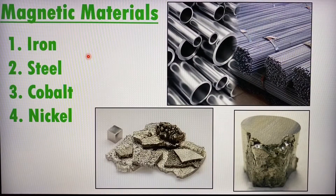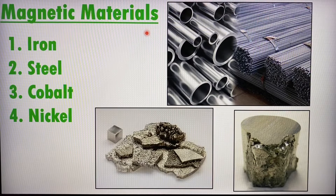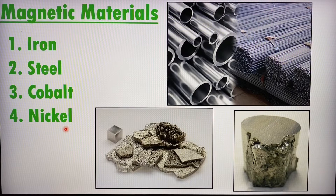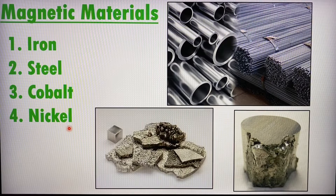First, I want to talk about magnetic materials or metals. Take note that if something is magnetic, it must be a metal. So we have iron, steel, cobalt, and nickel. There are actually quite a few more magnetic metals out there, but in primary three science, we only need to know iron, steel, cobalt, and nickel. In fact, we don't even need to know cobalt and nickel — students can just focus on iron or steel.